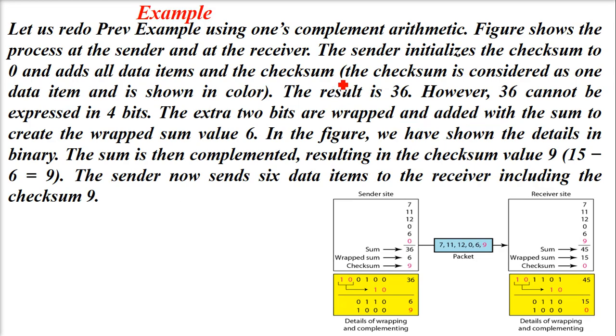Let us redo the example using one's complement arithmetic. The figure shows the process at the sender and receiver sites. The sender initializes the checksum to 0 and adds all items and the checksum. The checksum is considered as one data item and is shown in color. When we add all this, it becomes 36. Now 36, they wrap around, because 36 in binary is 100100.